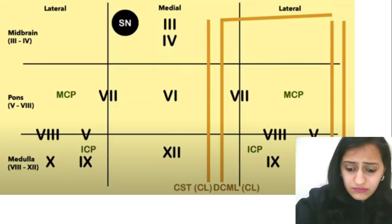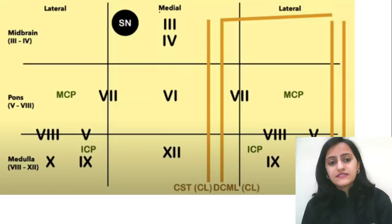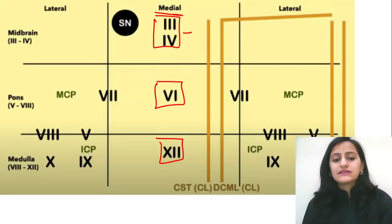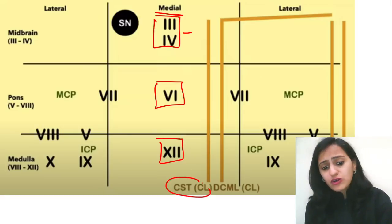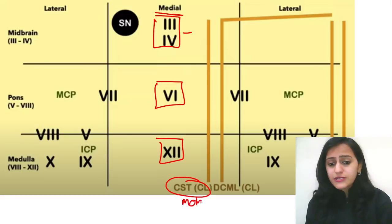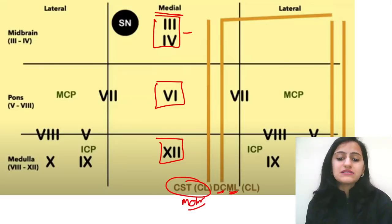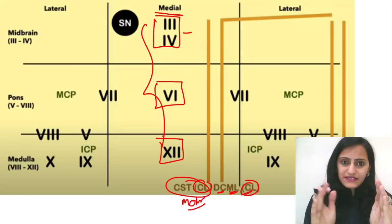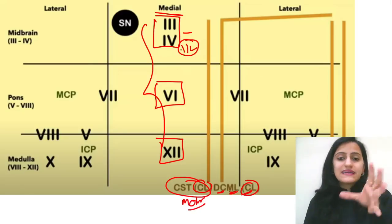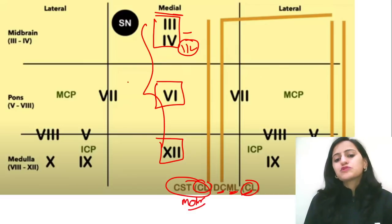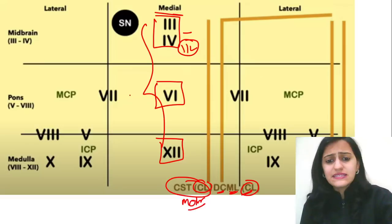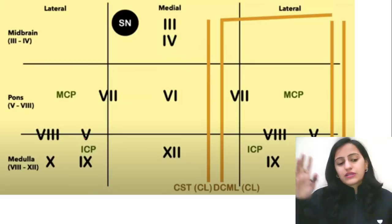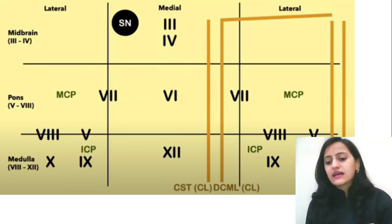Looking at the localization image: medially we have CNs 3 and 4 in the midbrain, CN6 in the pons, and CN12 in the medulla — the motor cranial nerve nuclei. Then the corticospinal tract causing hemiplegia and the dorsal column medial lemniscus, all contralateral. The cranial nerves, when affected, present ipsilaterally as lower motor neuron lesions. The rest are contralateral. Laterally, you see CN7, 5, 8, 9, 10 — all located on the side — along with the sympathetic chain and spinothalamic tract.